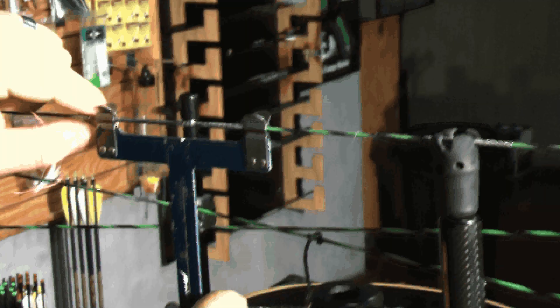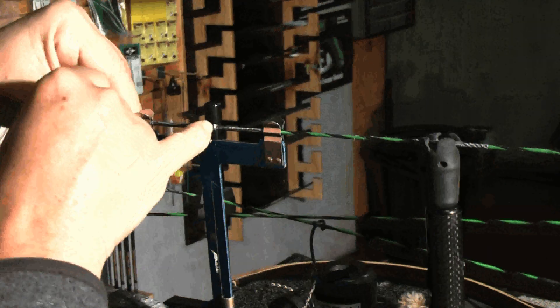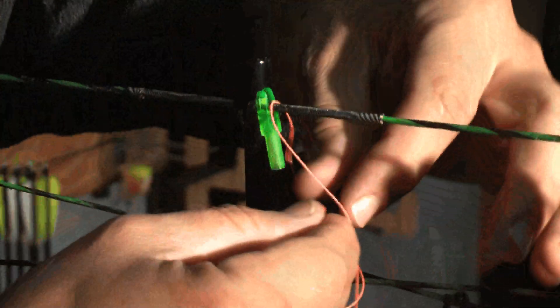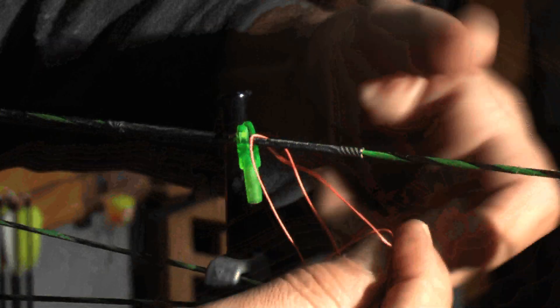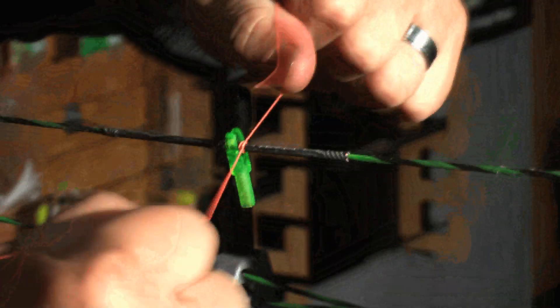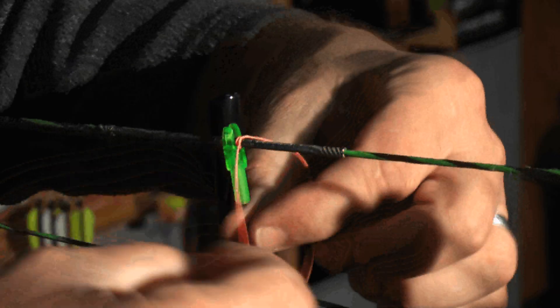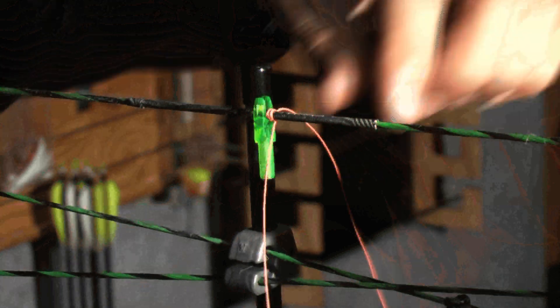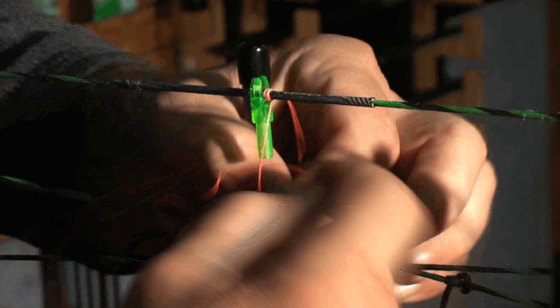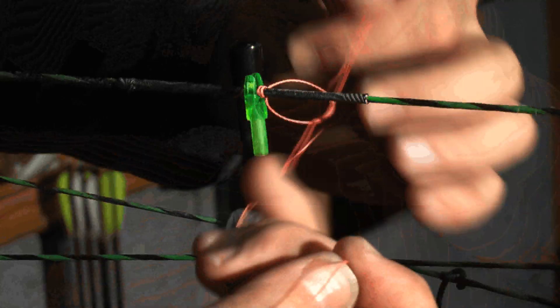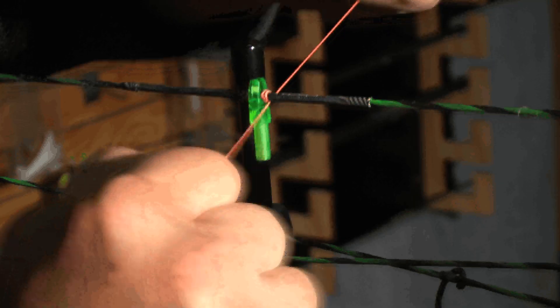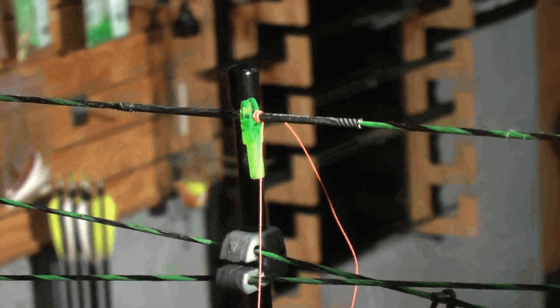First thing we do now is take your bow square, get your knocking point, mark it with anything. I use tip-ex, mark it with tip-ex. Now we're going to install the knock and then we're going to tie in an upper and a lower knock set. The normal over and under knot. We're going to tie the bottom part. I usually take about three knots, three or four knots. End it off nicely, cut it with the scissors.